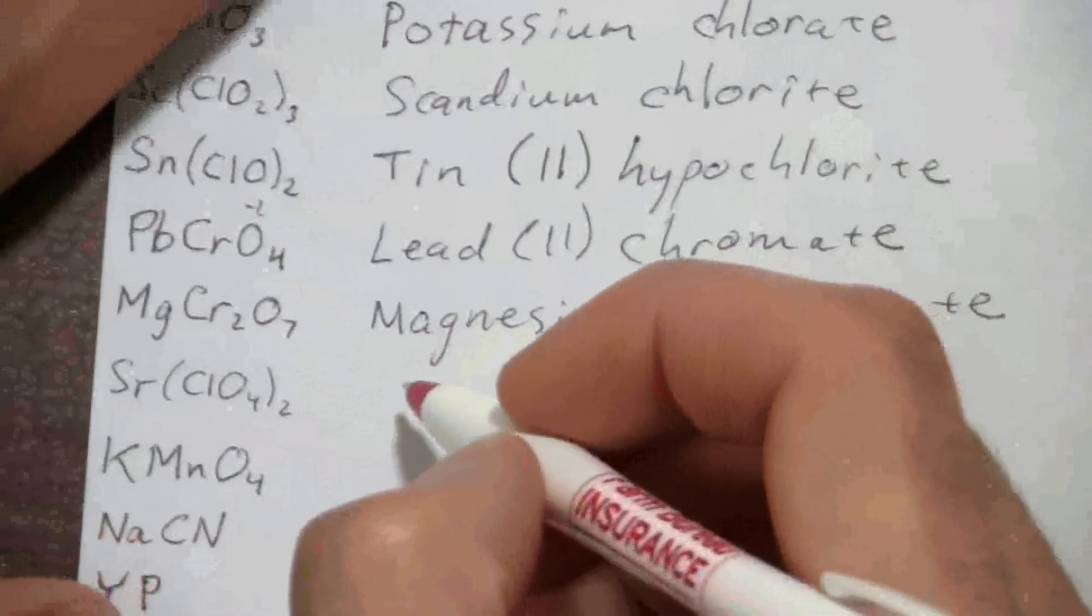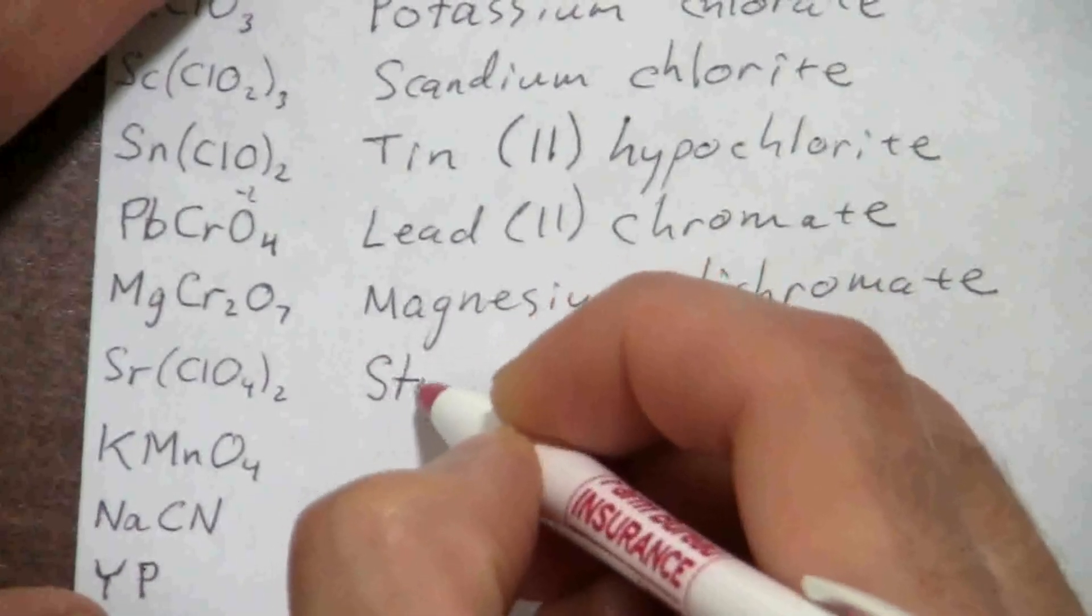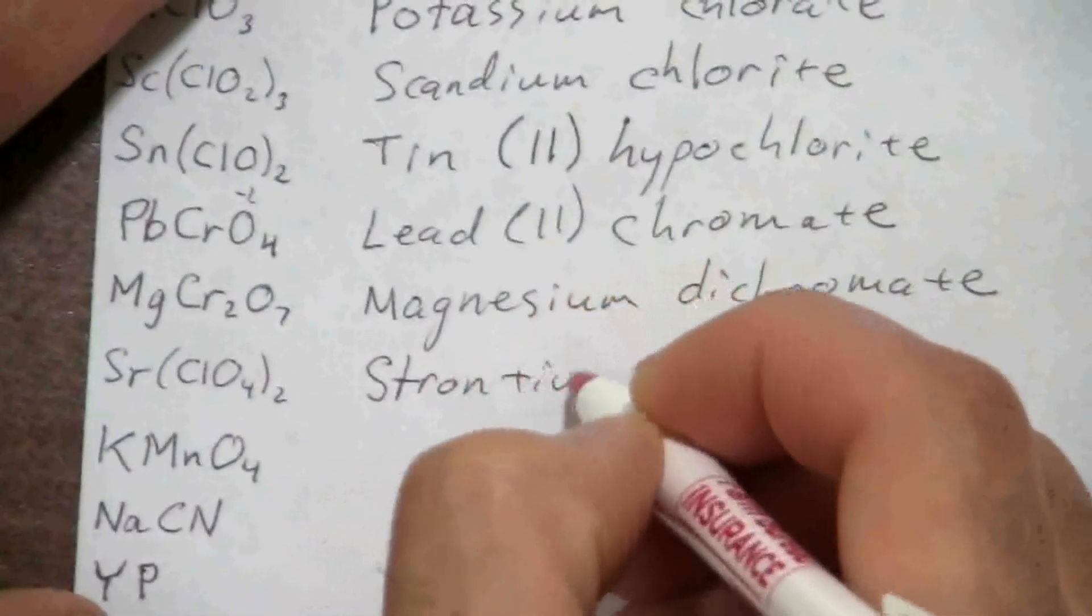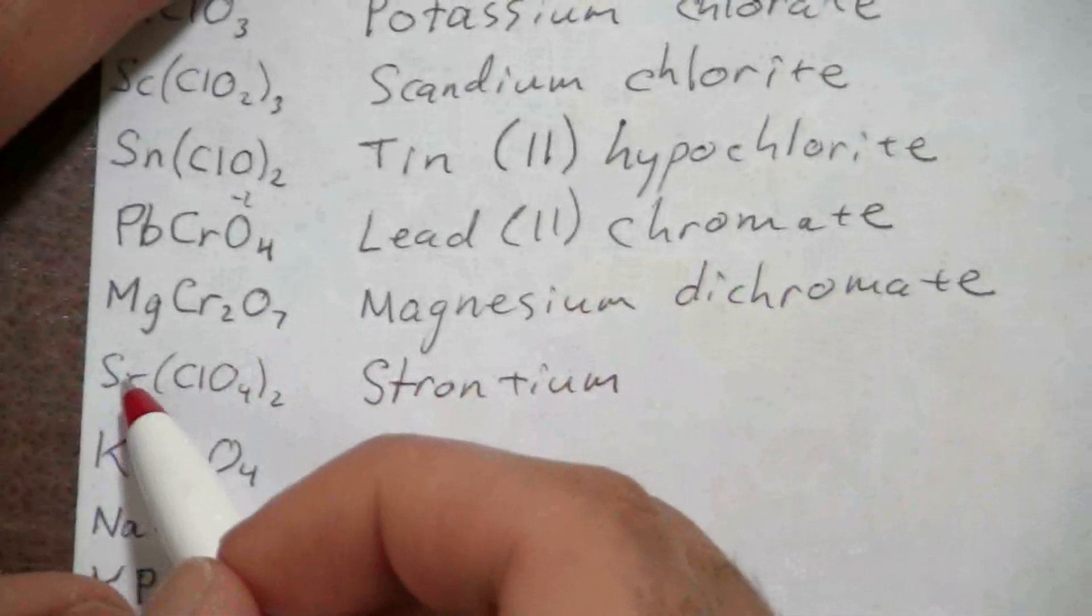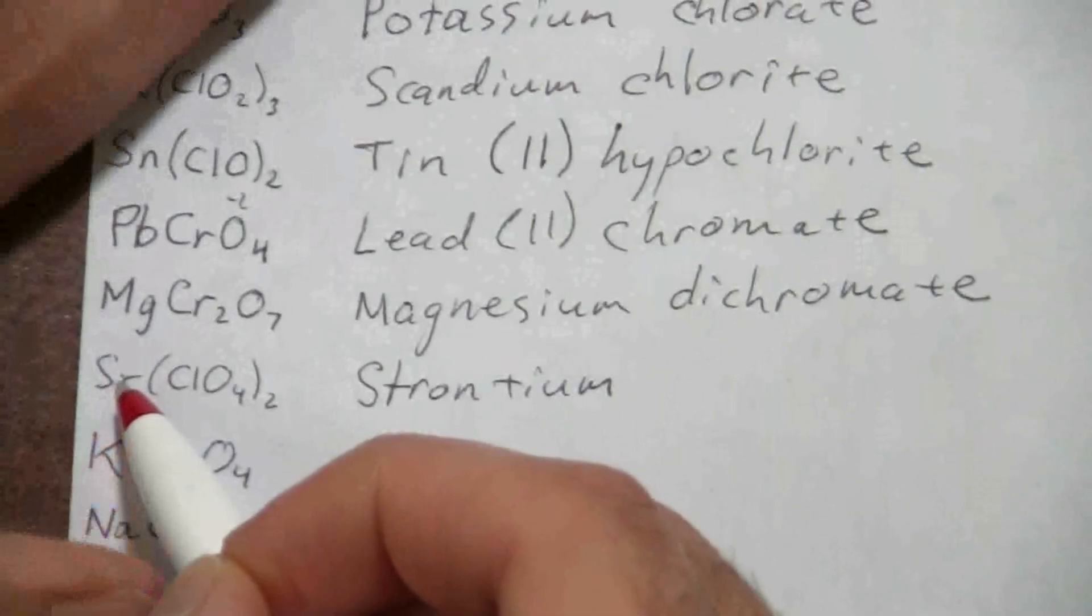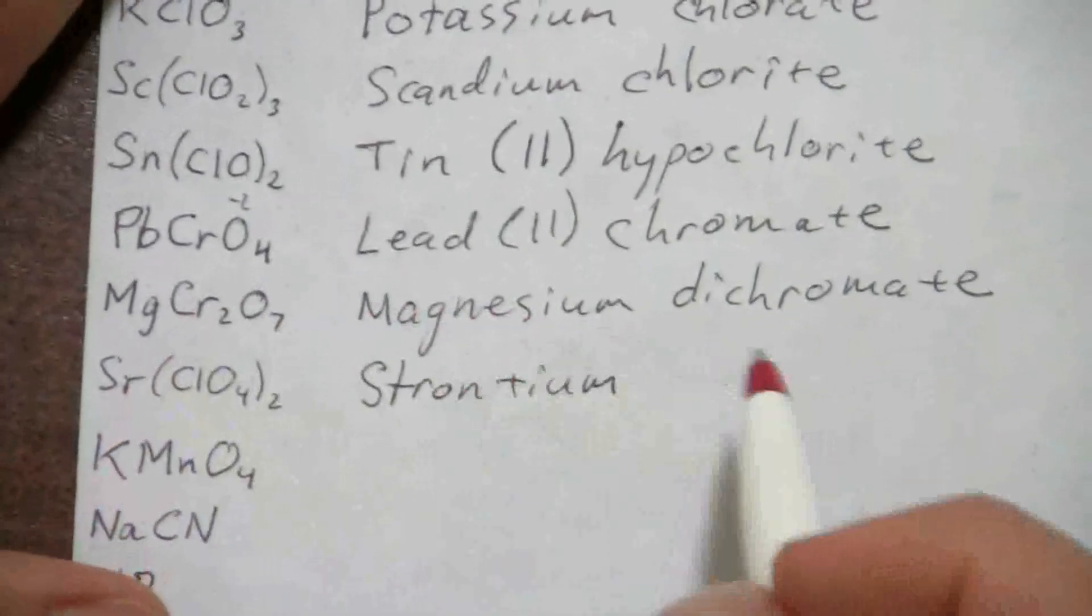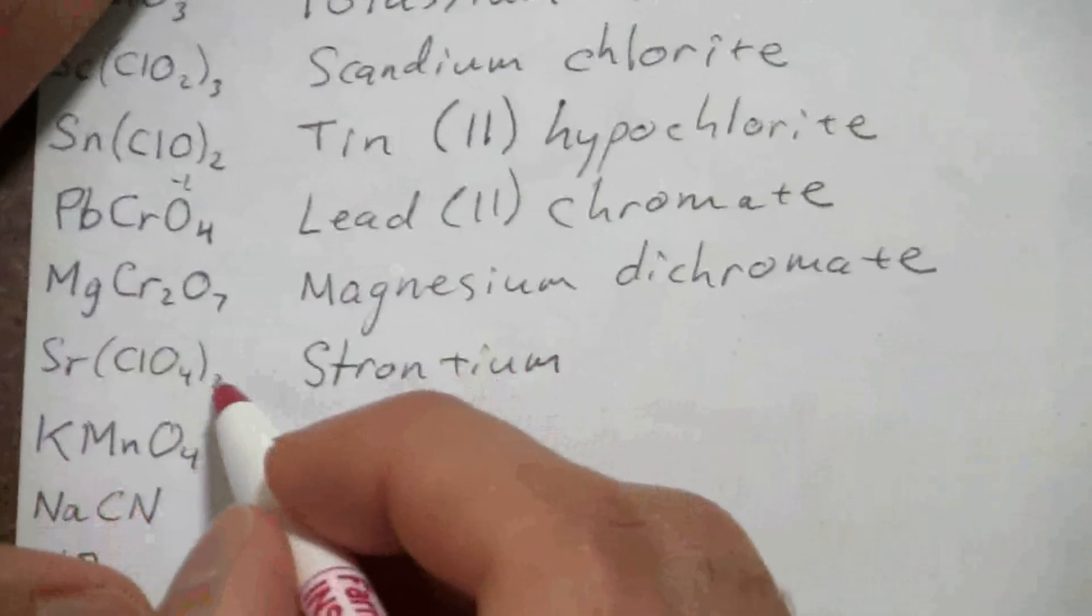Okay, just a few more. Here we have strontium, and strontium is in the alkaline earth metals group. It always has a plus two, so just like magnesium, we don't write the charge.